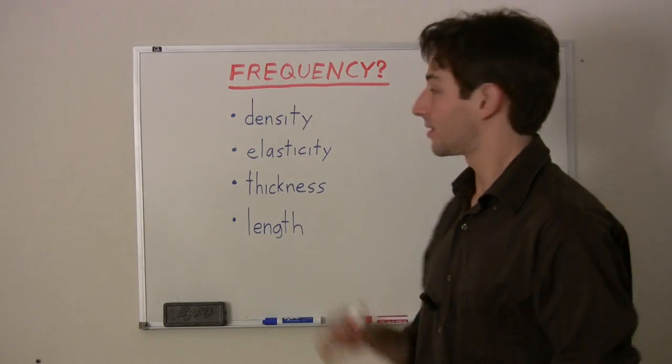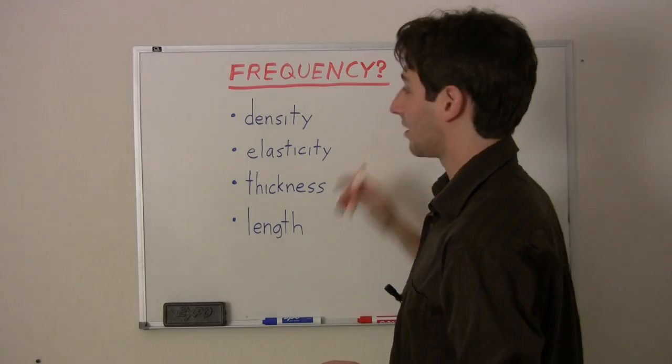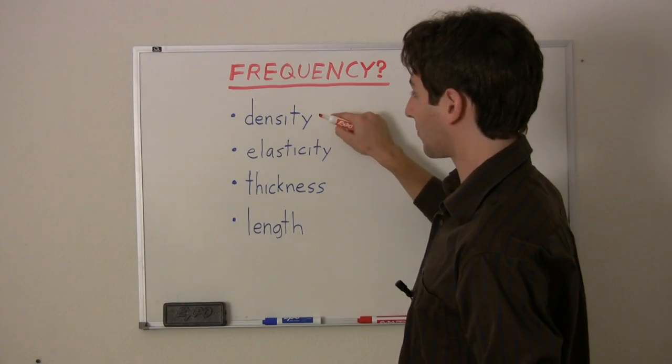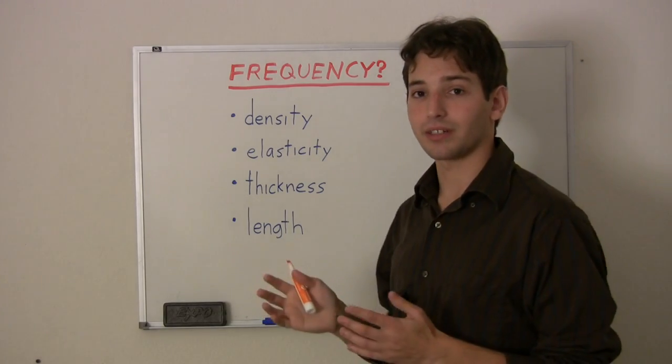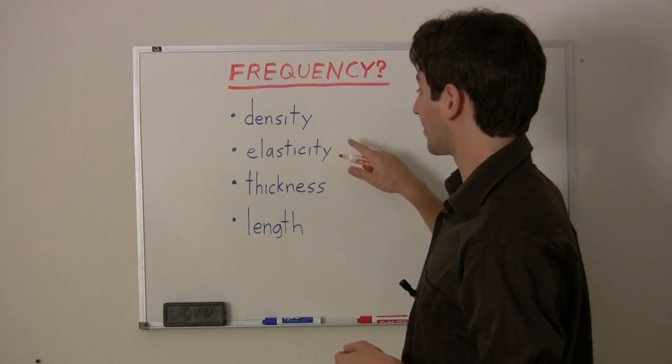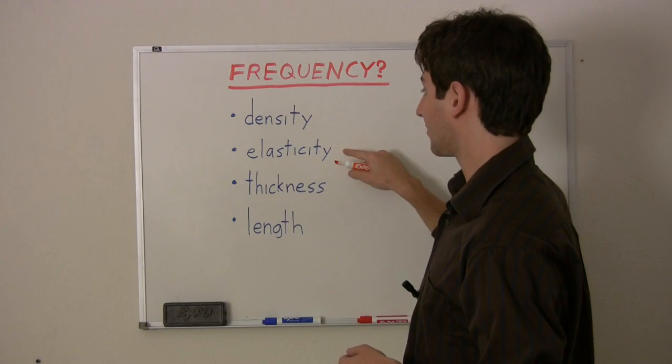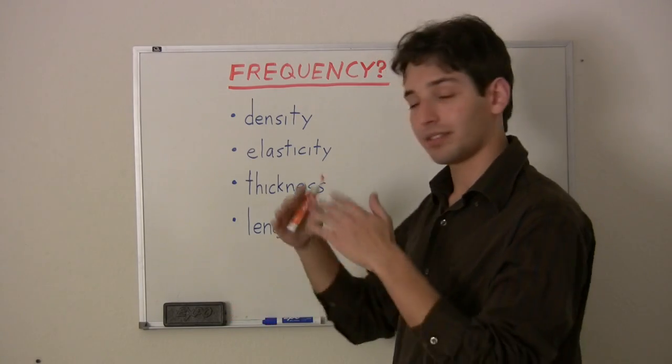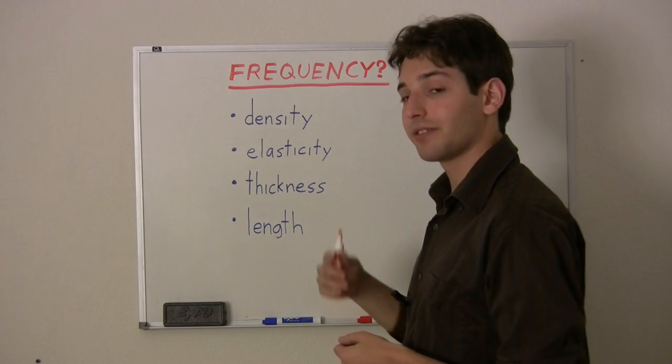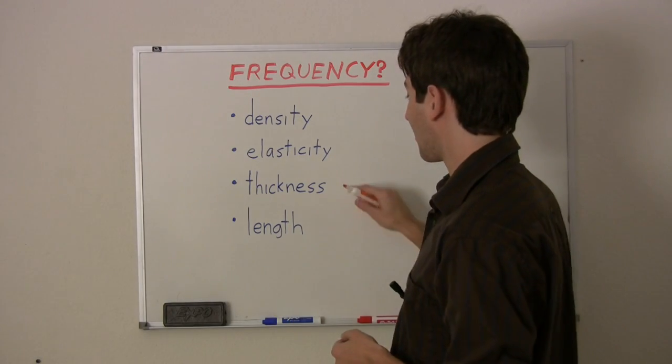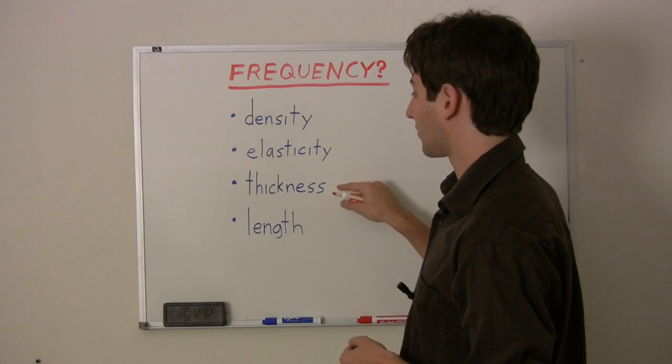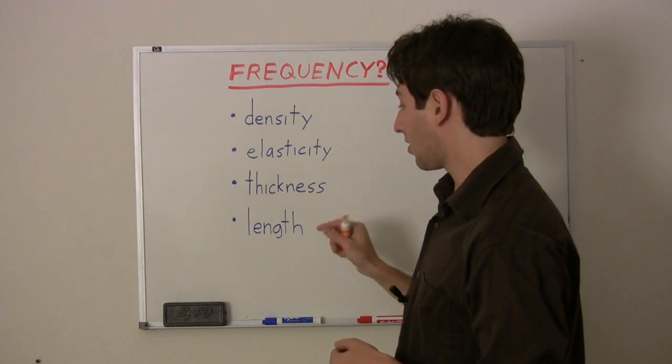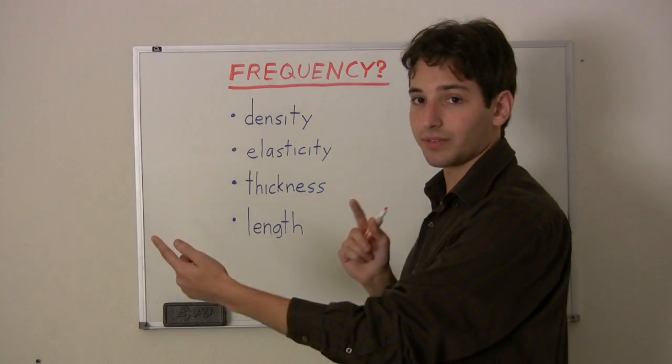So let's figure out what factors influence the frequency that our bar will vibrate at. First there's the material itself. A more dense bar will vibrate at a lower frequency. Then there's the stiffness or elasticity of the material. A less stiff material will vibrate at a lower frequency. Then there's the geometry of the bar. A thinner bar will vibrate at a lower frequency. And finally, there's the length of the bar. A longer bar will vibrate at a lower frequency.